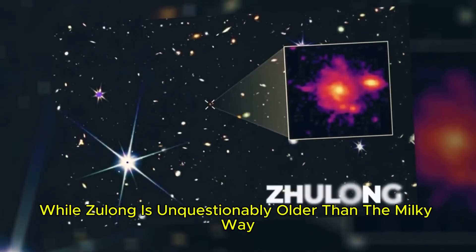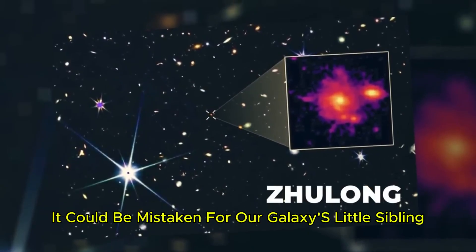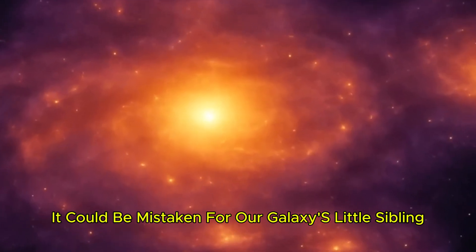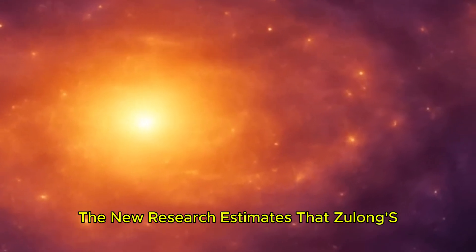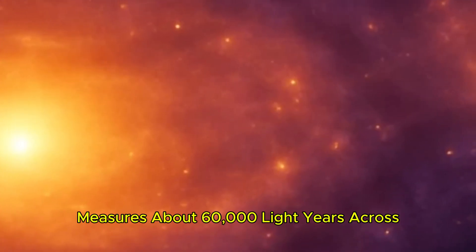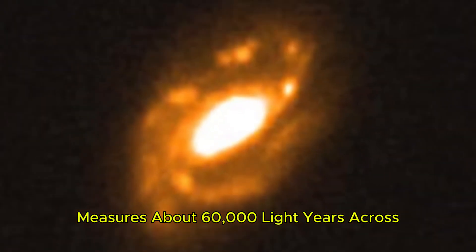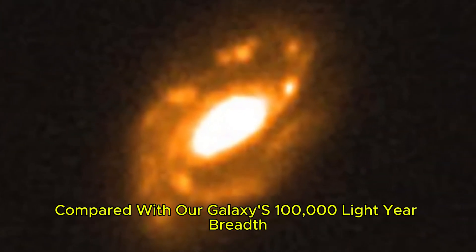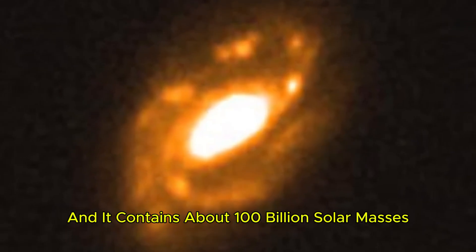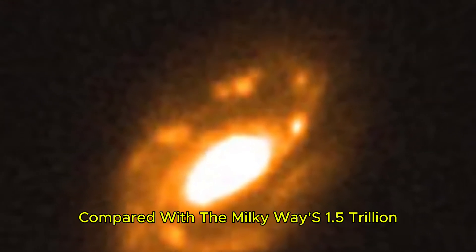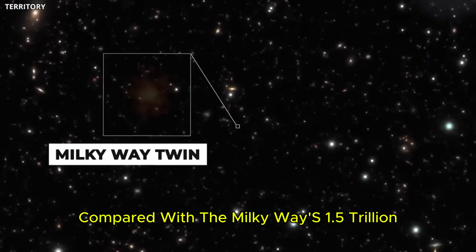While Zulong is unquestionably older than the Milky Way, it could be mistaken for our galaxy's little sibling. The new research estimates that Zulong's star-forming disk measures about 60,000 light-years across compared with our galaxy's 100,000 light-year breadth, and it contains about 100 billion solar masses compared with the Milky Way's 1.5 trillion.